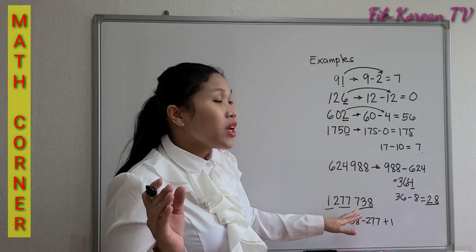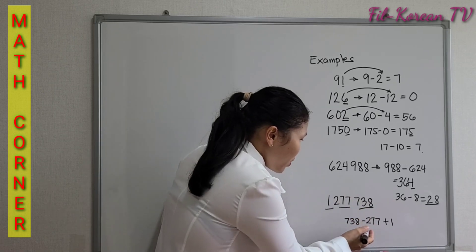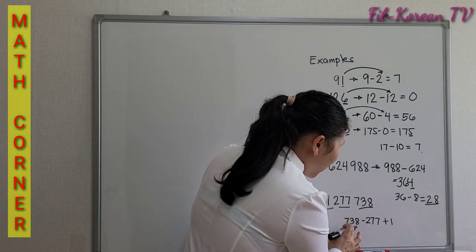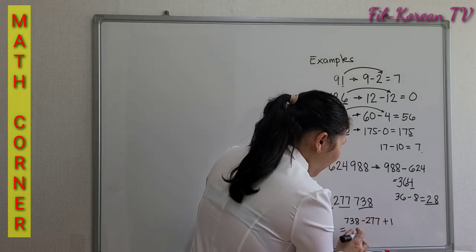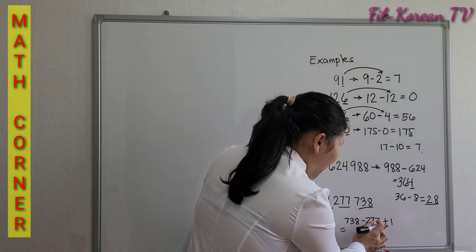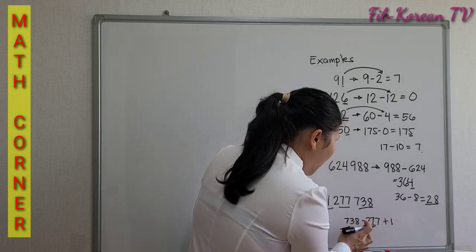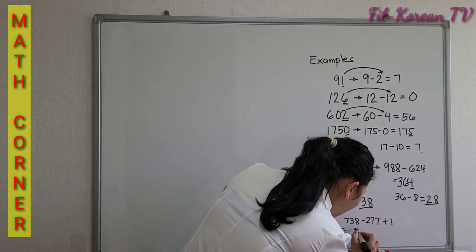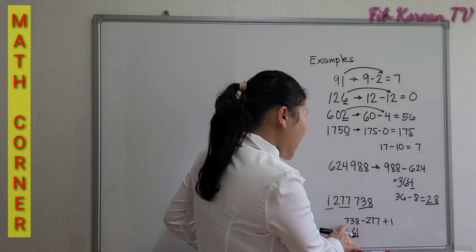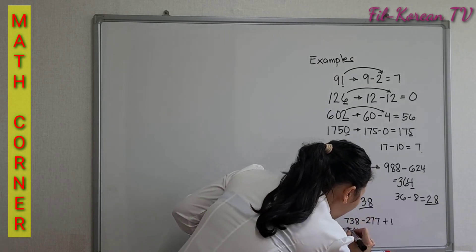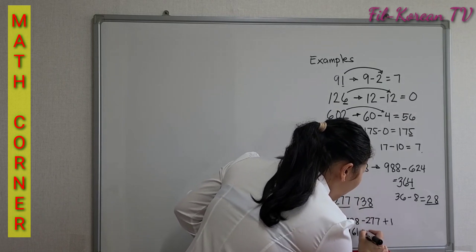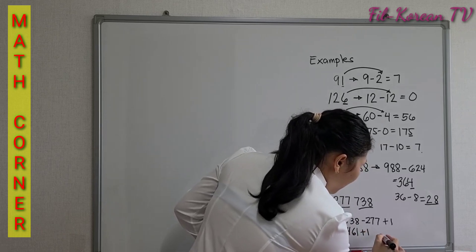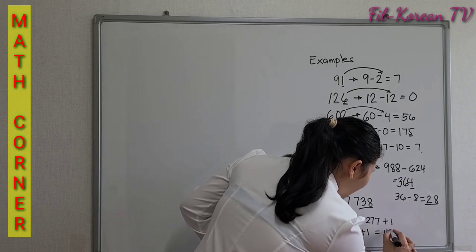We alternately subtract and add: subtract the second group from the first, then add the third group. So 738 minus 277: 8 minus 7 is 1; 3 minus 7 requires borrowing, giving 13 minus 7 equals 6; 7 becomes 6, and 6 minus 2 equals 4. That gives 461. Then we add the third group: 461 plus 1 equals 462.